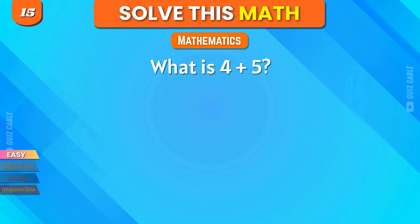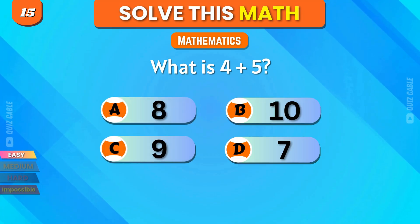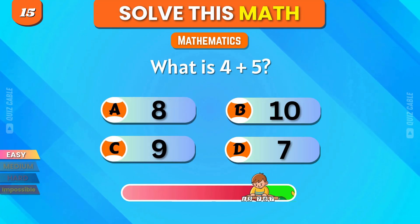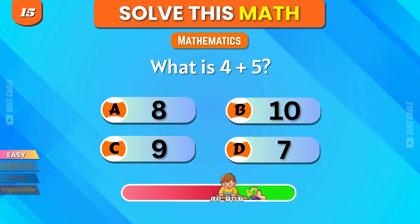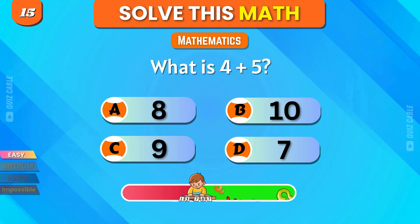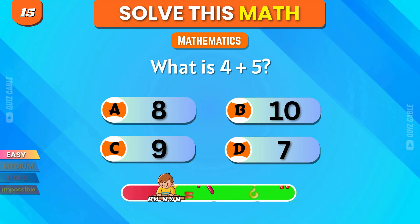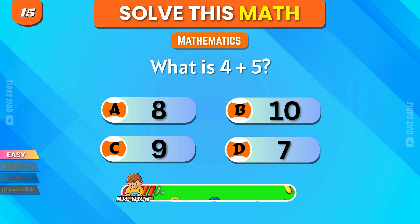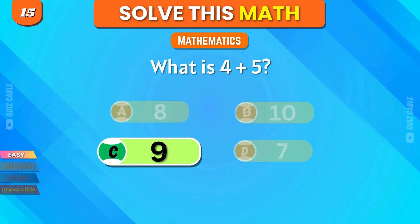What is 4 plus 5? 5, 8, 10, 9, 7. Correct, 9.